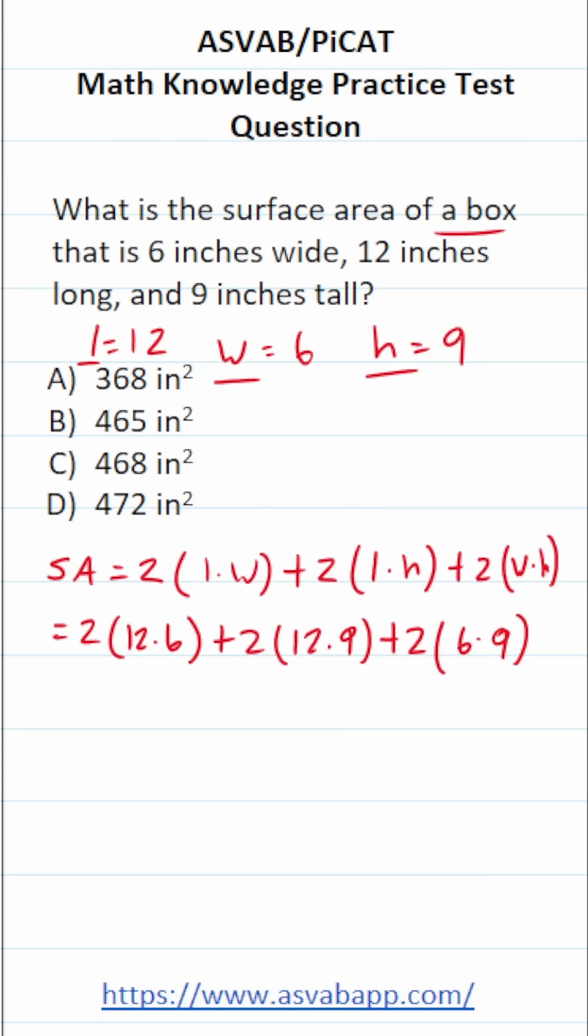Now, this is where mental math and knowing your times tables is pretty important. What is 12 times 6? It's 72. What is 12 times 9? It's going to be 108. And finally, what is 6 times 9? Now, truthfully, till this day, I still have to use my hands and fingers for this one. It's going to be 54.